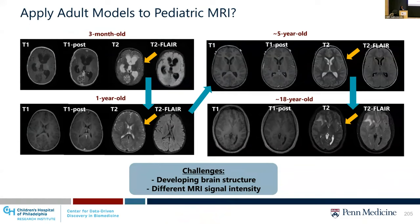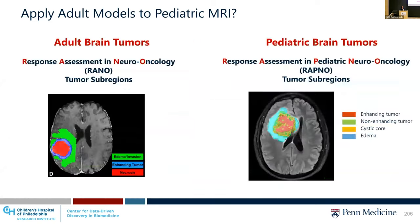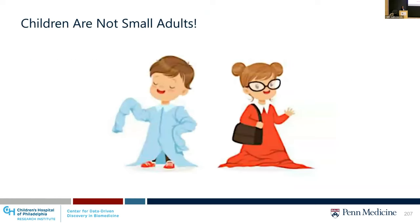One solution would be to apply adult models to pediatric scans, but as you can see from the images here, from a three-month-old to one-year-old to five-year-old to eighteen-year-old, brain structure is constantly changing and developing, and MRI signal intensity is also changing over the developing brain. So it is not feasible to use adult models in pediatric patients. Another challenge is sub-region identification — for pediatric brain tumors based on RAPNO criteria, it is recommended to differentiate enhancing tumor from non-enhancing tumor, cystic core, and edema for assessment of treatment response.